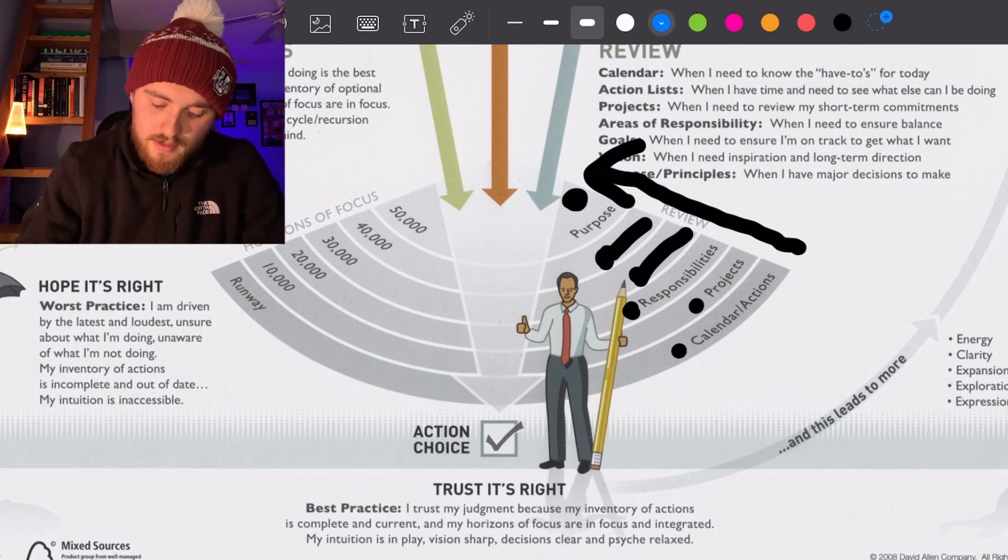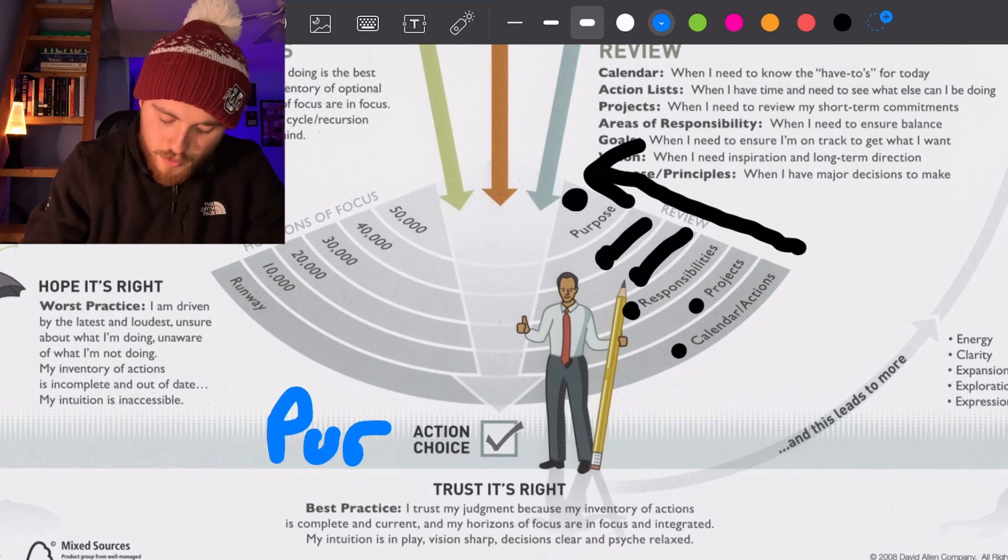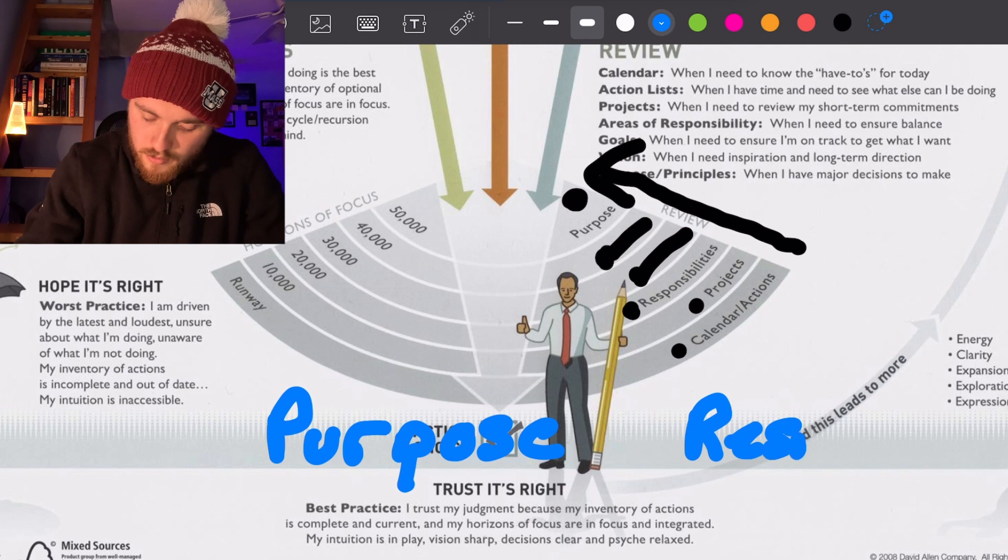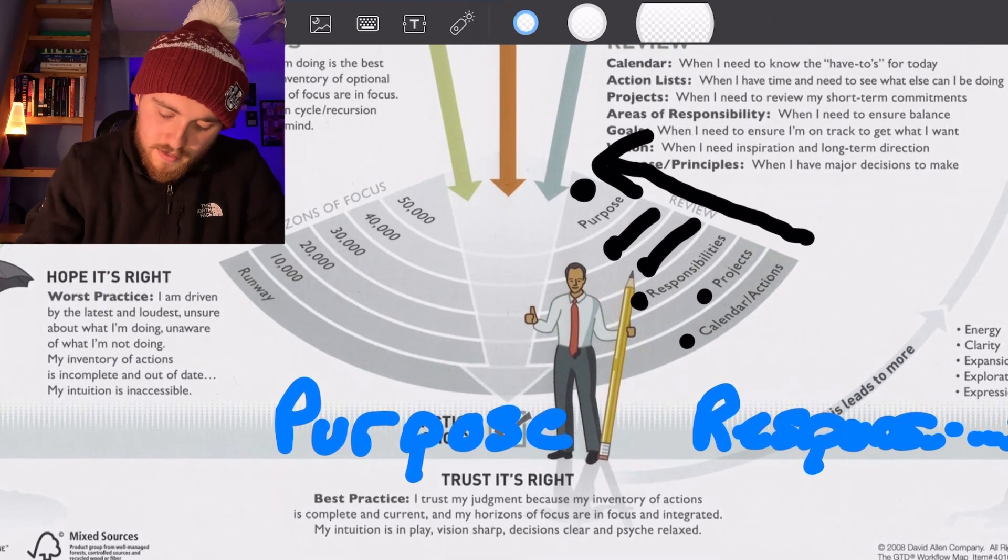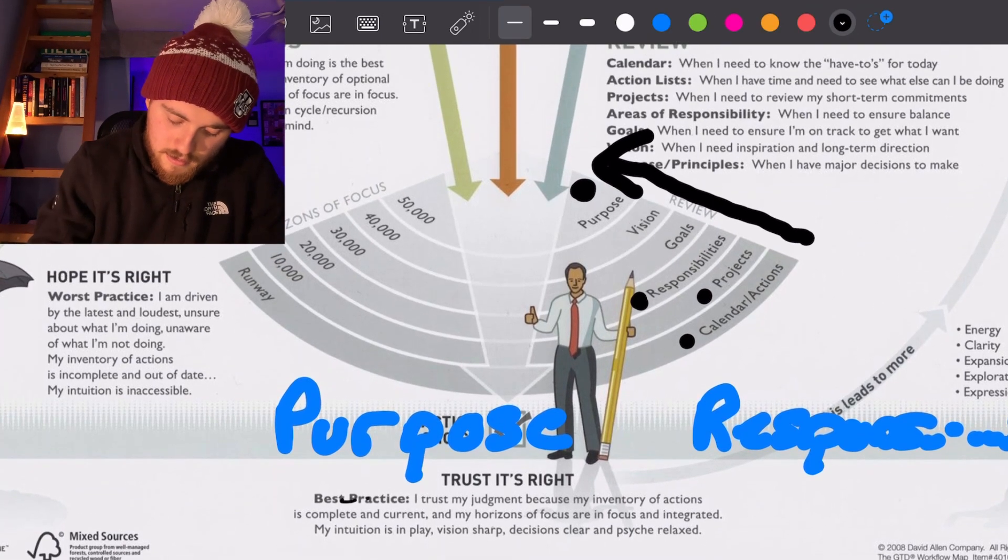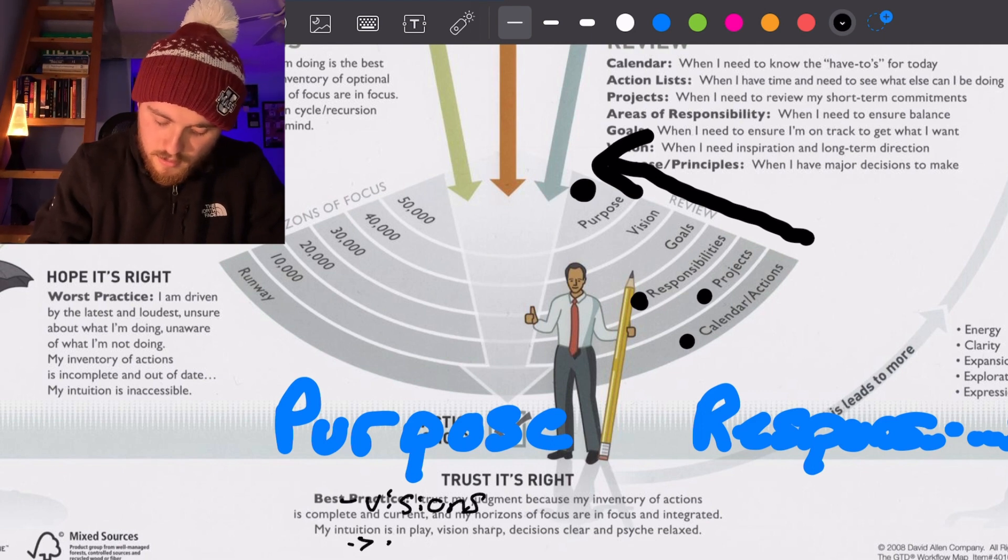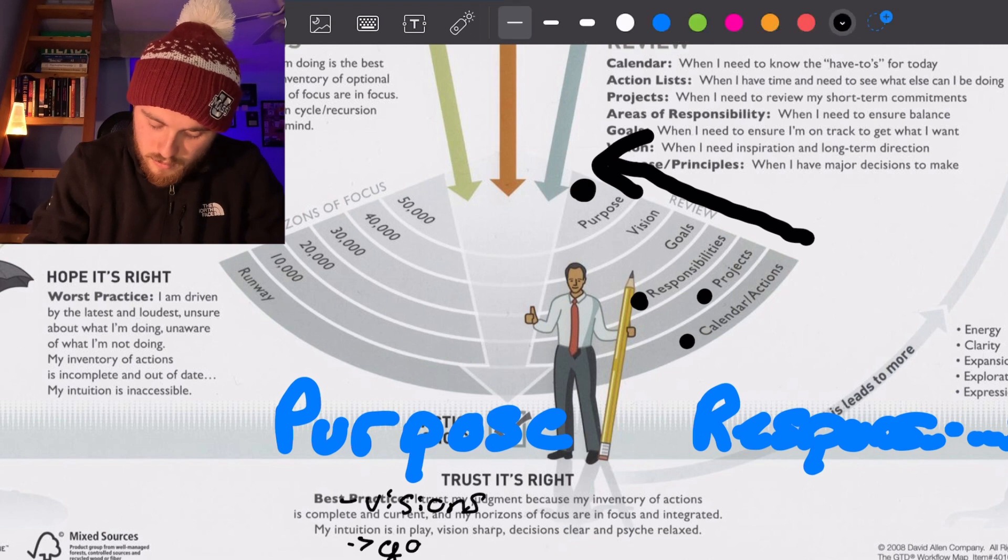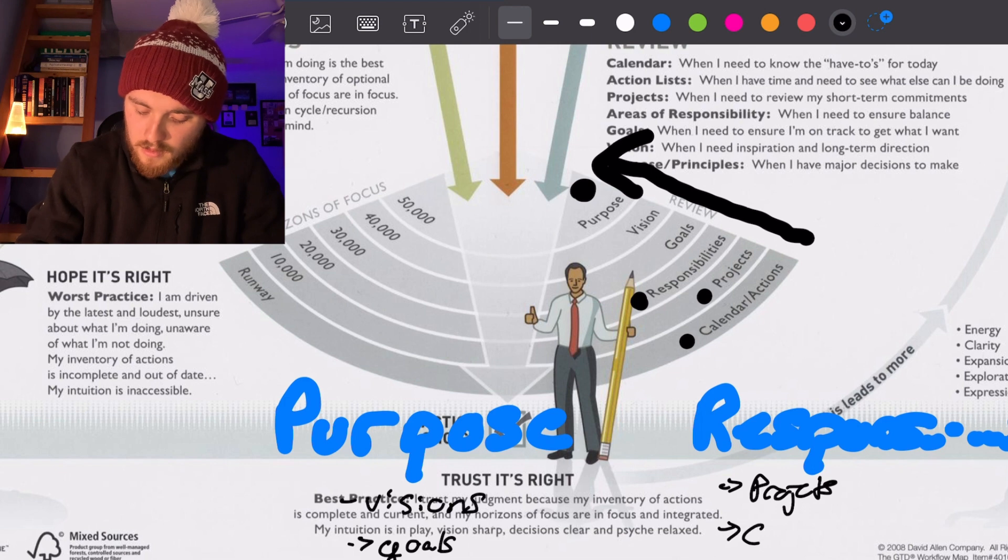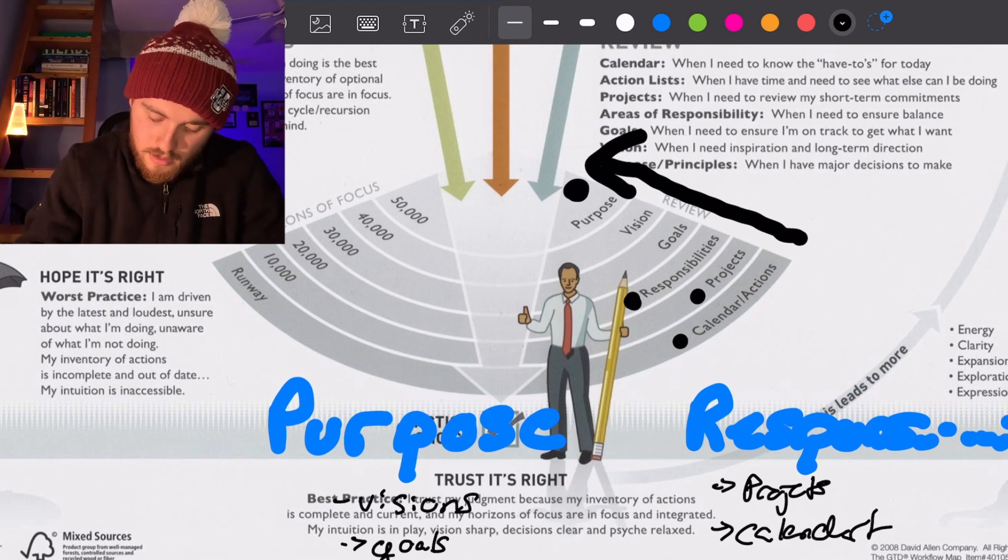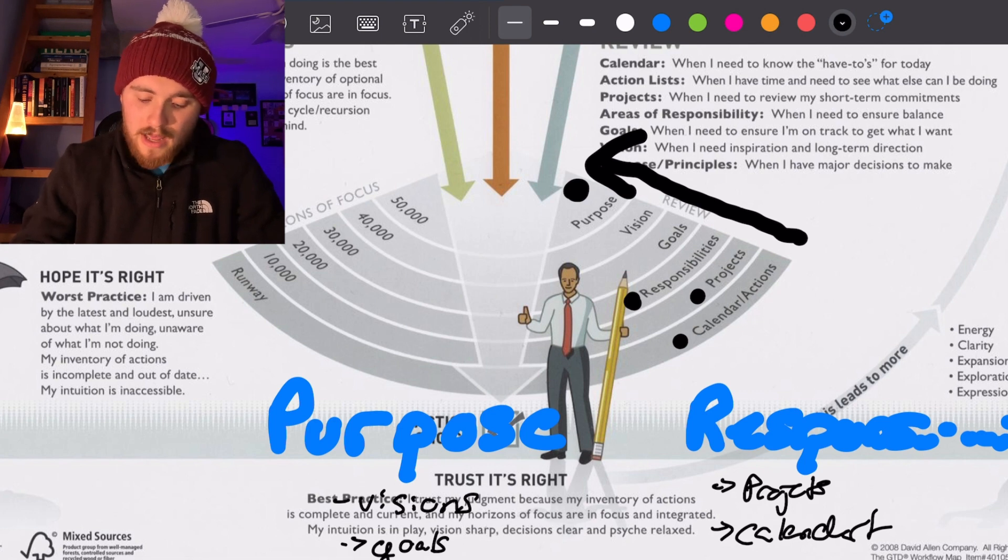So projects and calendar of actions. I'm saying there's two things for this. It's going to be your purpose and your responsibilities. And under your purpose you're going to have things like visions, goals, and projects. And under your responsibilities you can still have projects, but you'll have calendars. And you can kind of put both, you have visions, goals, projects, and calendars under both. But for the purpose of this video, that's how I'm defining it.